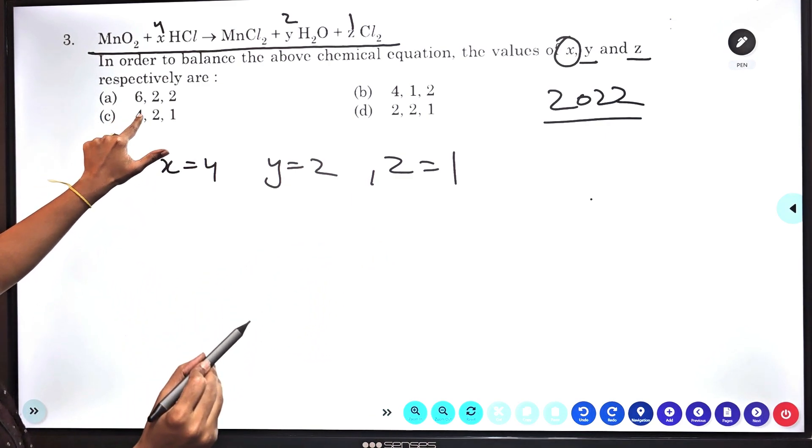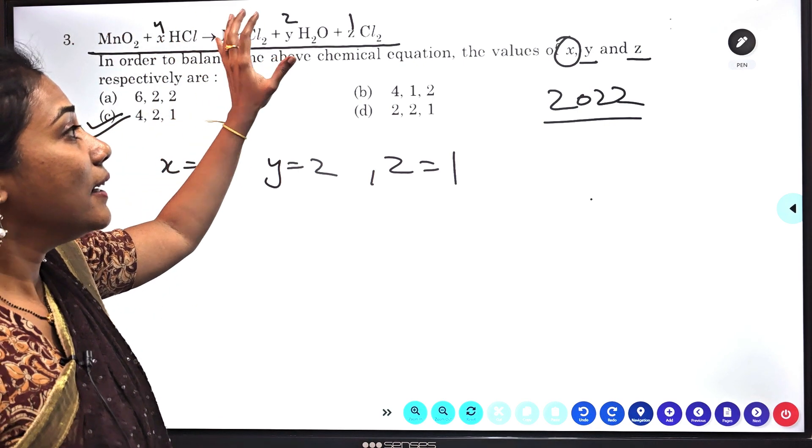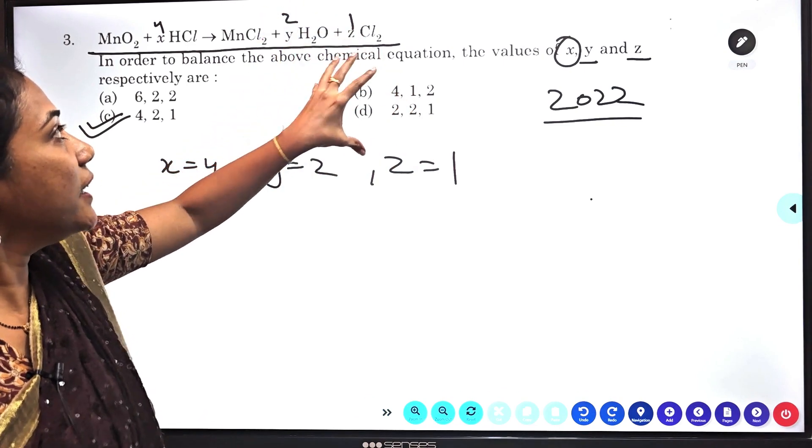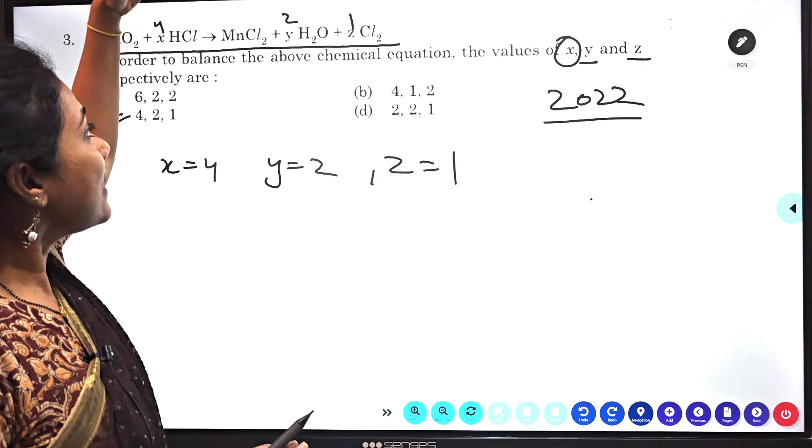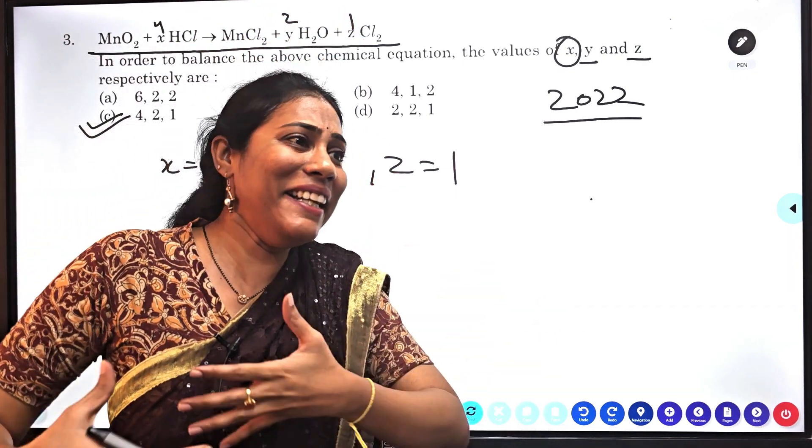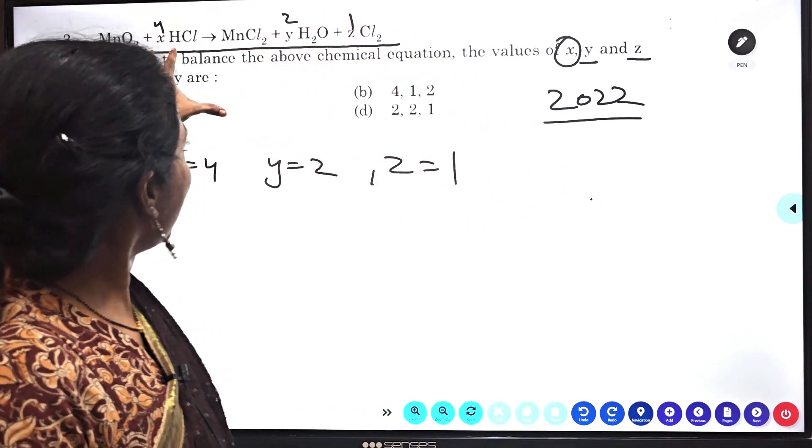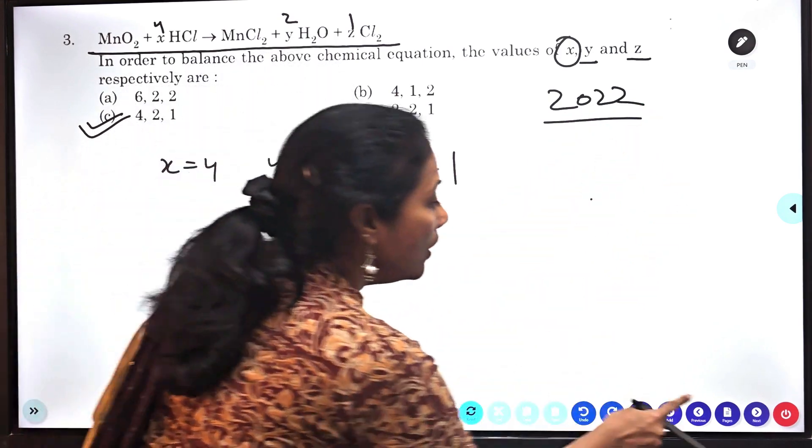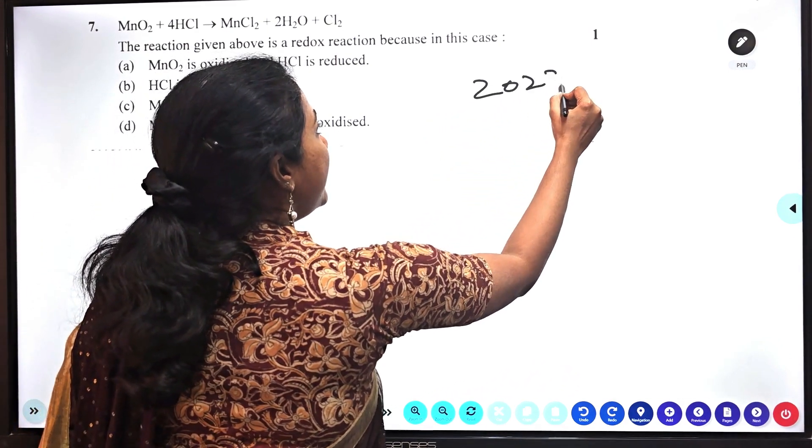So X is equal to four, Y is equal to two, Z is equal to one. So where is the option? Four, two, one. So you will go for option C. Remember, I don't want to stress about what way they frame the question. I wanted you to stress about this chemical equation. So keeping this chemical equation in our mind, question can be framed in n number of ways. So based on this chemical equation, they framed a question this way in 2022 board paper.